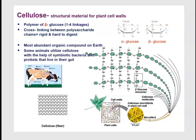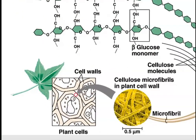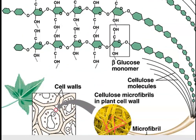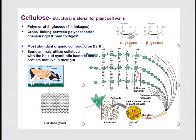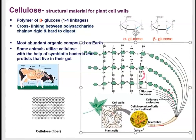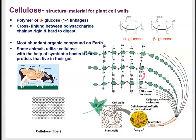Cellulose is a polysaccharide found only in the cell walls of plants. Zooming into the cell wall, you can see microfibrils that look tightly woven like fabric. Pulling out one microfibril reveals chains held together by glycosidic linkages and cross-linkages, forming a sheet. Cellulose is very hard to digest; humans lack the enzyme to break it down.